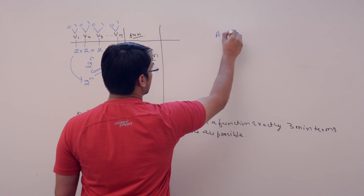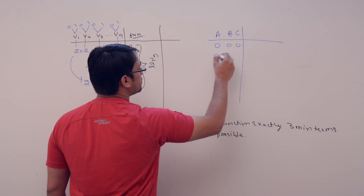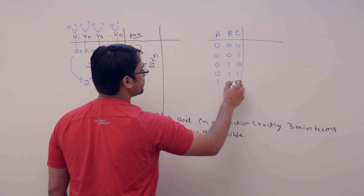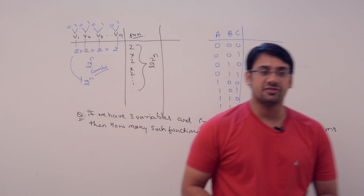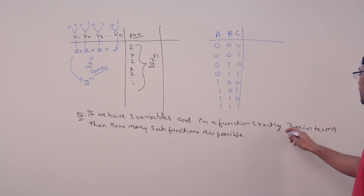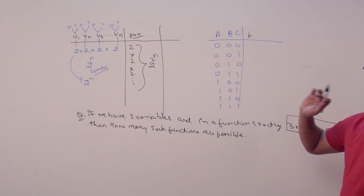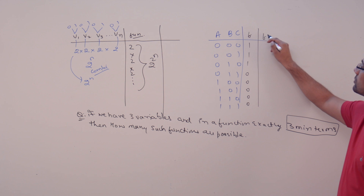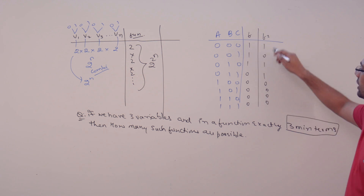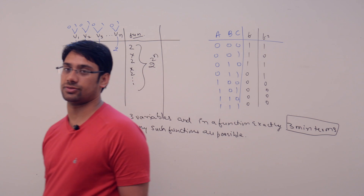For a function with three variables A, B, and C, the combinations range from 000 to 111, giving eight rows in the truth table. We have exactly three minterms, and those ones can be placed anywhere — in any combination among those eight locations.